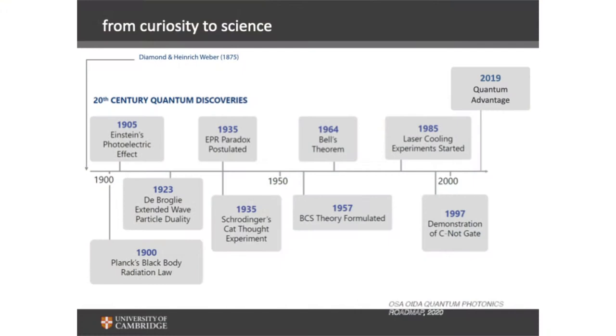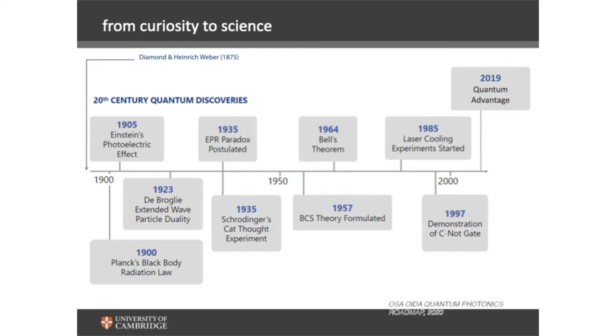Going back to history: we always treat it as fundamental science leading to technology. Science develops out of curiosity — blue skies research — then you find a way to use it for an application and develop business. This is a nice flow from the Optical Society of America website highlighting advances in quantum physics related to light. It starts with Planck's blackbody radiation, then the photoelectric effect where Einstein got the Nobel Prize. I'm also adding one more date: 1875, Heinrich Weber, who measured the heat capacity of things.